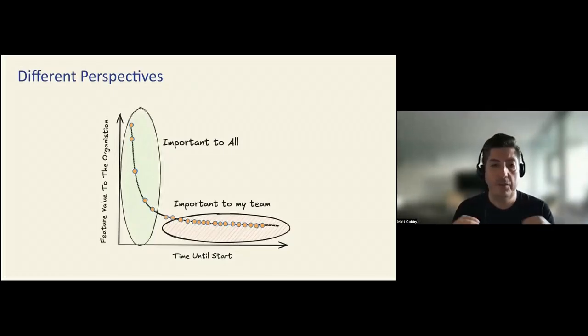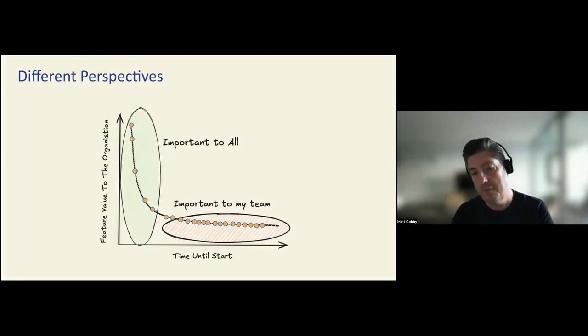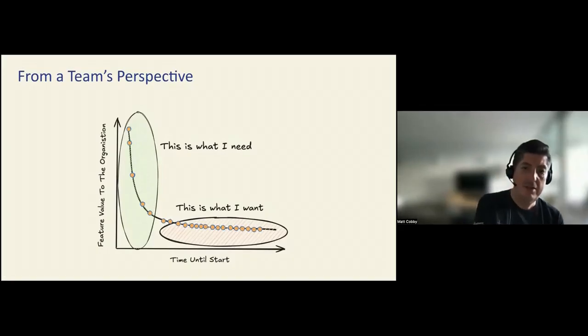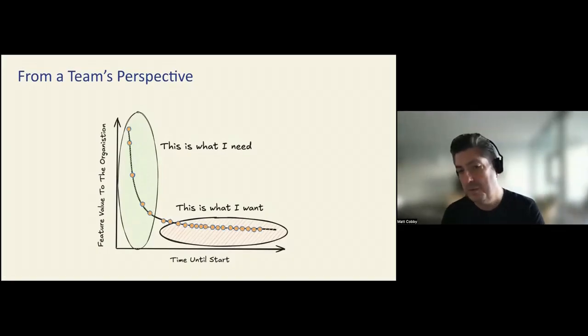So the different perspectives are, from the product management on the platform, the green, the ones we're delivering are important to all. But if you're in a team and an individual aspect and you put your own requests in, these are things which are important to your team. A different way to view that is, from a team's perspective, the things which have been delivered by the platform team are the things that you need. But I also want the things that are there in red, but they're not going to get across the line this quarter, next quarter, even perhaps the quarter after that. And this is going to lead to lots of tension.